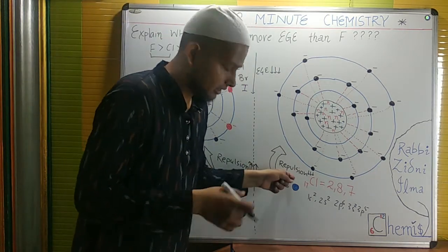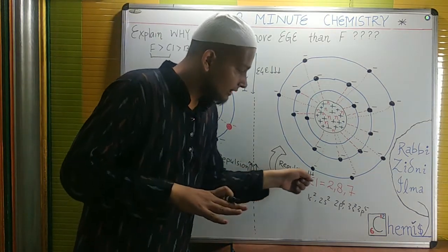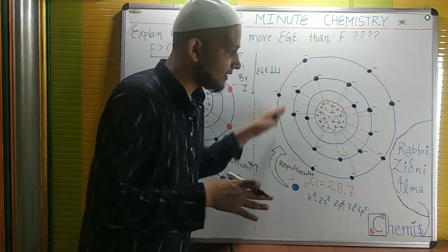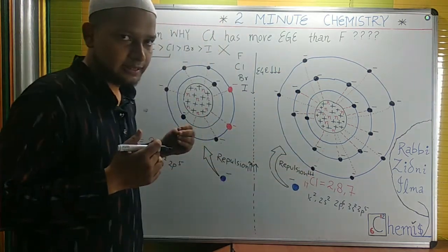In this case, the repulsion is also there, but less repulsion because chlorine has a larger atomic size.